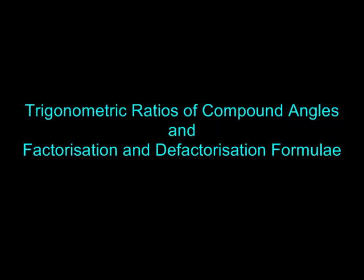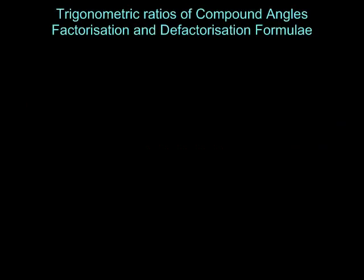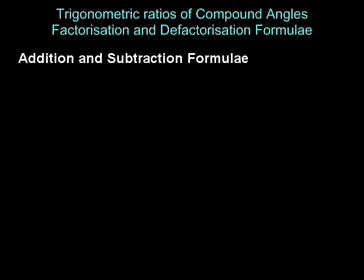Trigonometric ratios of compound angles and factorization and defactorization formulae. In this chapter we discuss the formulae for the trigonometric ratios of angles whose measures are alpha plus beta and alpha minus beta in terms of the trigonometric ratios of alpha and beta. We may think that sine of alpha plus beta is sine alpha plus sine beta just by opening the bracket, but this is not true. We shall now discuss the formulae for cos, sine, and tan for the angles alpha plus beta and alpha minus beta.